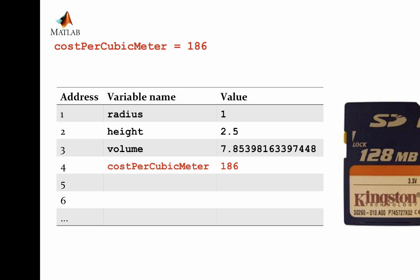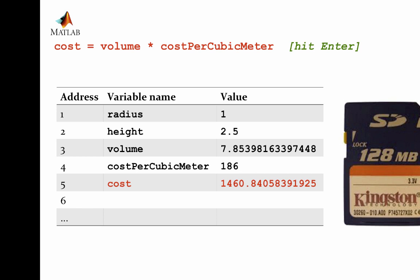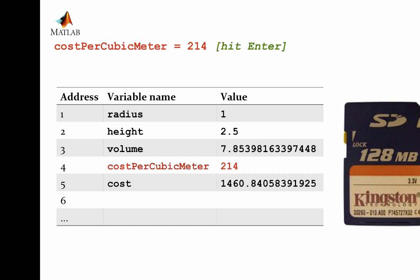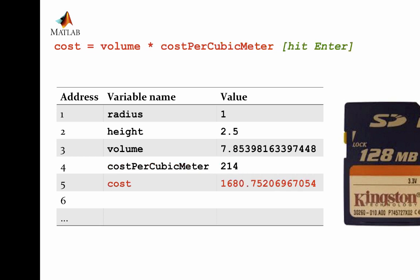We assign the first value for cost per cubic meter: $186. After that, we perform a calculation that gives us a value of about $1,400 to $1,500 for a column at that cost per cubic meter. Then we reassign the cost per cubic meter — updating the value but not the name of the variable — and recalculate cost. The cost of the new column comes out to about $1,680.75.